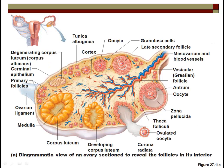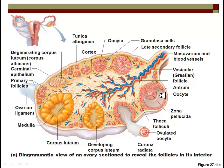Looking inside the ovary in cross section, you can see some primary follicles with granulosa cells and more than one cell layer. This is the later secondary follicle, starting to show the antrum — quite large here. This is where it's starting to bulge outside the ovary. You can see the zona pellucida, which is a layer around the egg that sperm will have to get through.